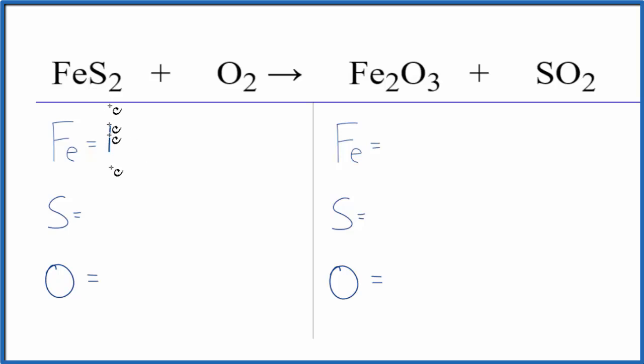We have one iron, two sulfur atoms, and then two oxygen atoms. On the product side we have two iron, just one sulfur, and oxygen we have three plus two. So we have five oxygen atoms. Make sure you count all of the oxygen atoms on the product side.